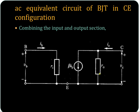That is connected in parallel — a current source in parallel with a resistance R0. The emitter is a common terminal. Combining the input and output sections, you get the AC equivalent circuit of BJT in common emitter configuration.